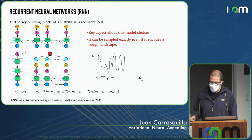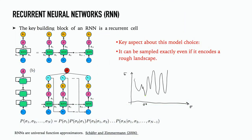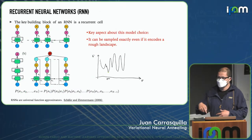The models I'm using today are recurrent neural networks because they allow exact sampling and access to a normalized probability distribution. An RNN uses a recurrent cell to express the probability distribution over spin variables using the chain rule of probability: P(sigma_1) times P(sigma_2 | sigma_1), and so on. The key aspect is that it can be exactly sampled even if the distribution it encodes is complex.